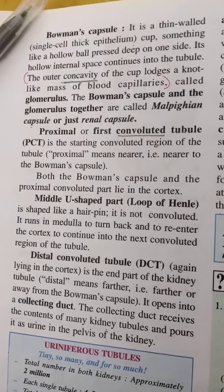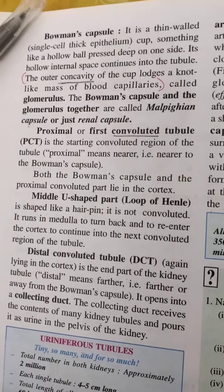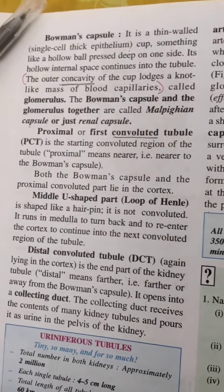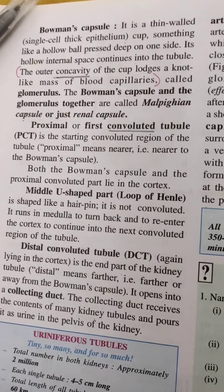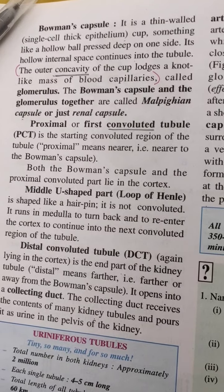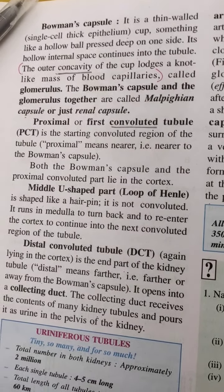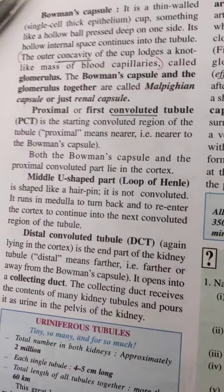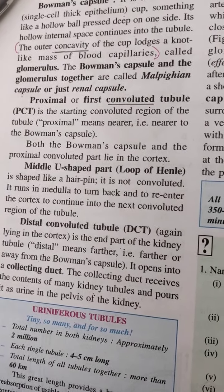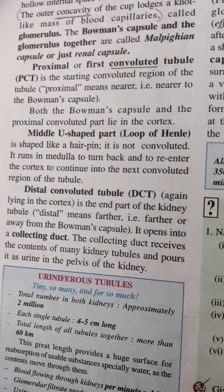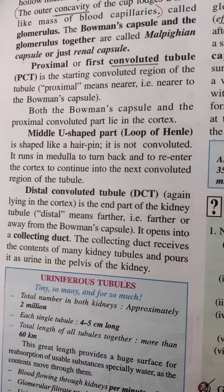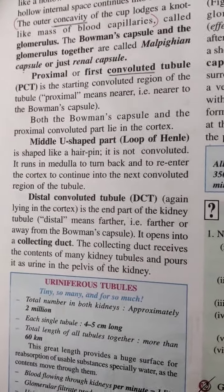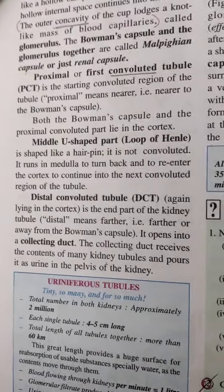The Bowman's capsule is a thin-walled, cup-like structure, something like a hollow ball pressed deep on one side. Its hollow internal space continues into the tubule, and the outer concavity of the cup lodges a knot-like mass of blood capillaries called the glomerulus. Together, the Bowman's capsule and glomerulus are known as the Malpighian capsule or renal capsule. The first convoluted tubule is the proximal convoluted tubule (PCT), the middle U-shaped turn is the loop of Henle, and the last turn is the distal convoluted tubule, which opens into the collecting duct.